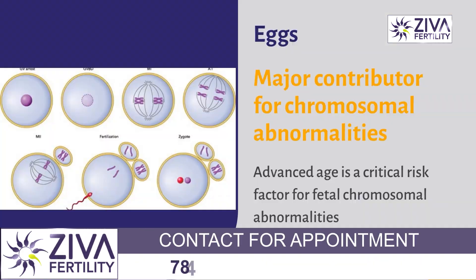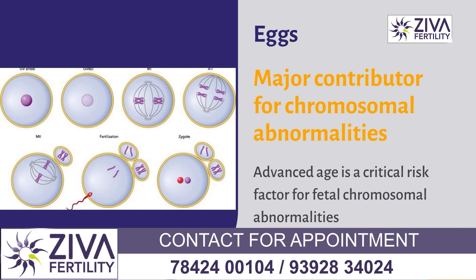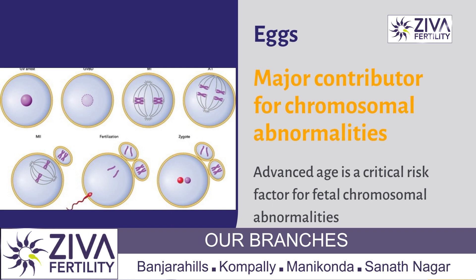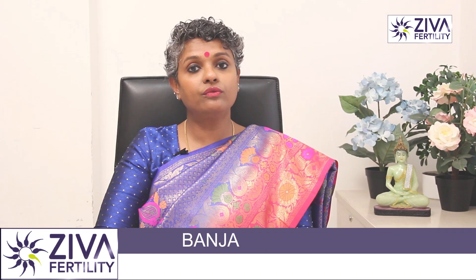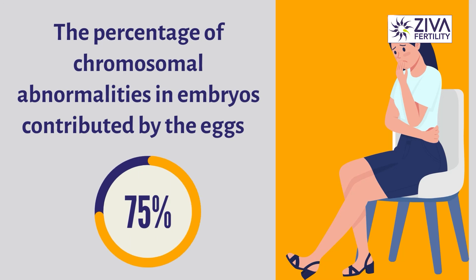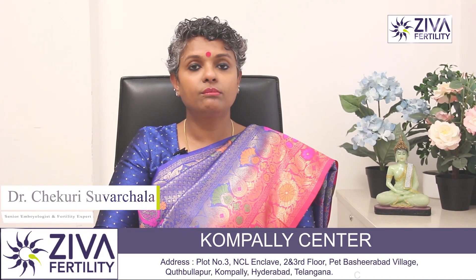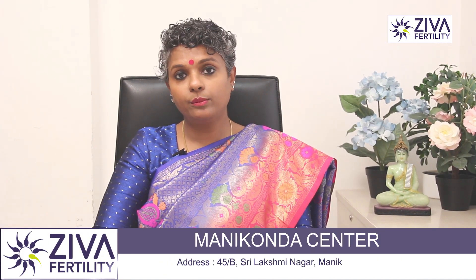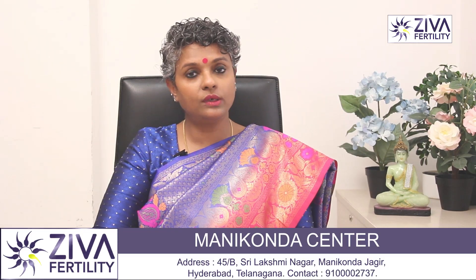We'll start from the basics. The eggs are a major contributor of chromosomal abnormality. Various studies reveal that with advanced age, the number of oocytes with chromosomal abnormalities is high — as up to 75% of chromosomal abnormalities in embryos are contributed by the eggs. It's not just the age but a lot of other factors which also contribute to this chromosomal abnormality.